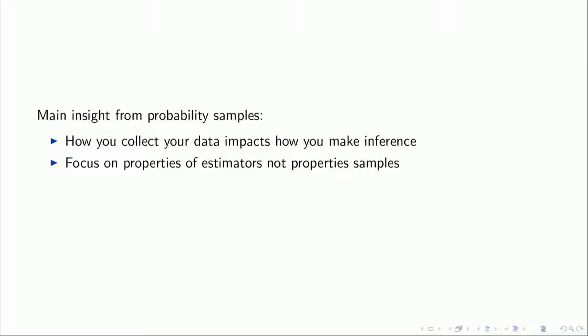The two main non-technical insights from probability sampling are: first, how you collect your data impacts how you make your inference — think about the process that led you to receive the data and undo any distortions. Second, focus on properties of estimators, not samples. You can have samples that look very strange but yield high-quality estimates if you do the right kind of weighting. The focus is really on the estimators, not the samples.